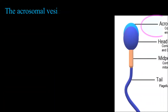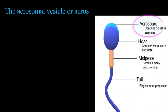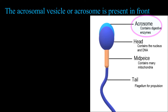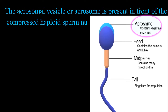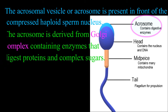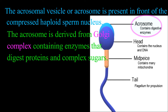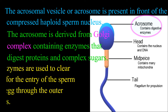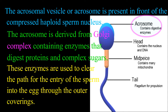The acrosomal vesicle or acrosome is present in front of the compressed haploid sperm nucleus. It is derived from the Golgi complex containing enzymes that digest proteins and complex sugars. These enzymes are used to clear the path for the entry of sperms into the egg through the outer coverings.